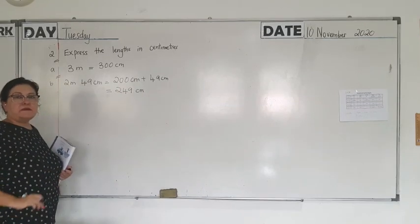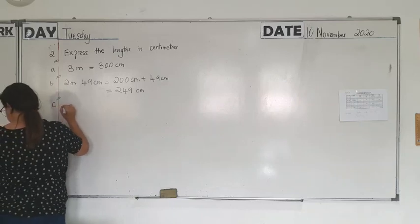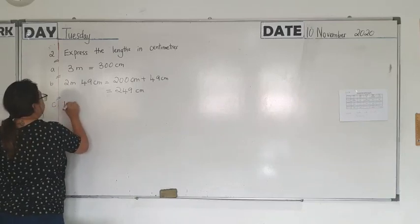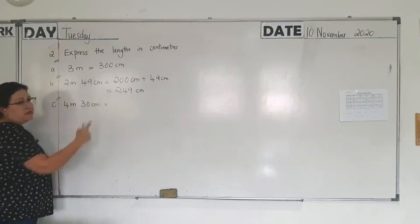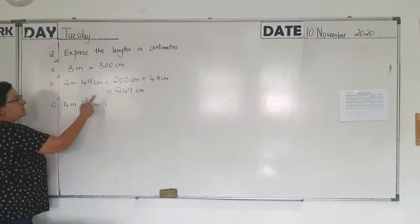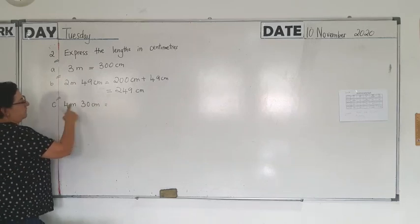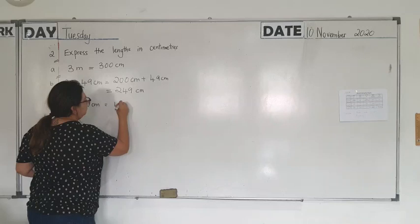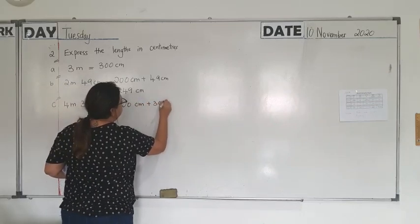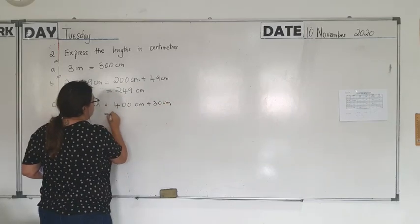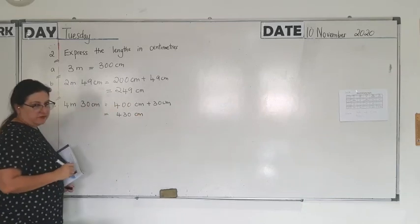Now this is simple, so please try and understand this. C, 4 metres and 30 cm. So we are converting from metres to cm. This is metres to cm. So 4 metres is 400 cm plus 30 cm is equal to 430 cm.